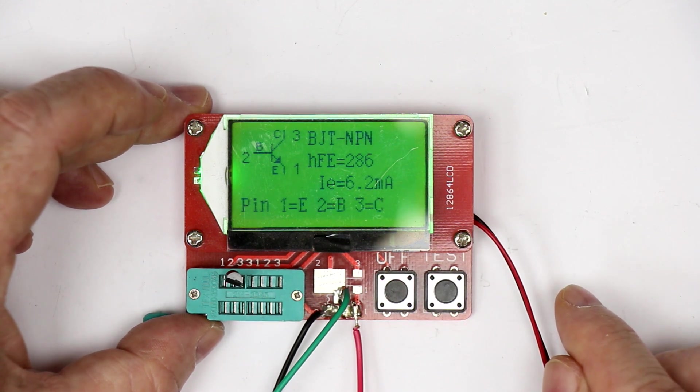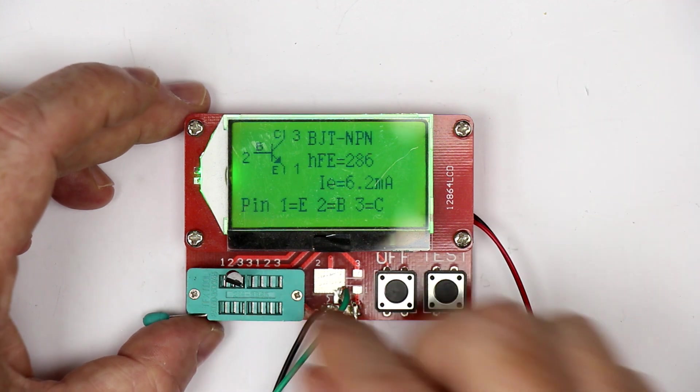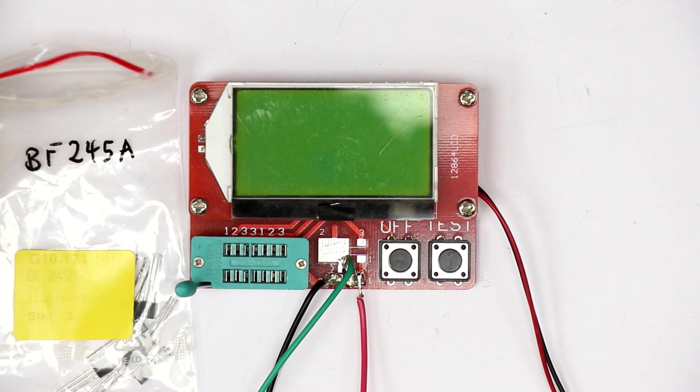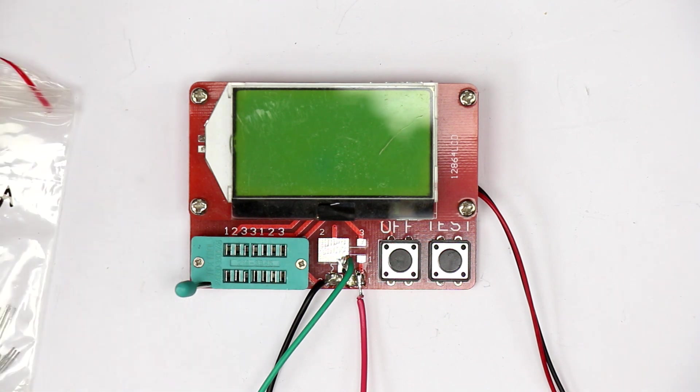We get bipolar junction transistor NPN. So instead of a JFET, an n-channel JFET, we get a bipolar transistor, so clearly a fake.